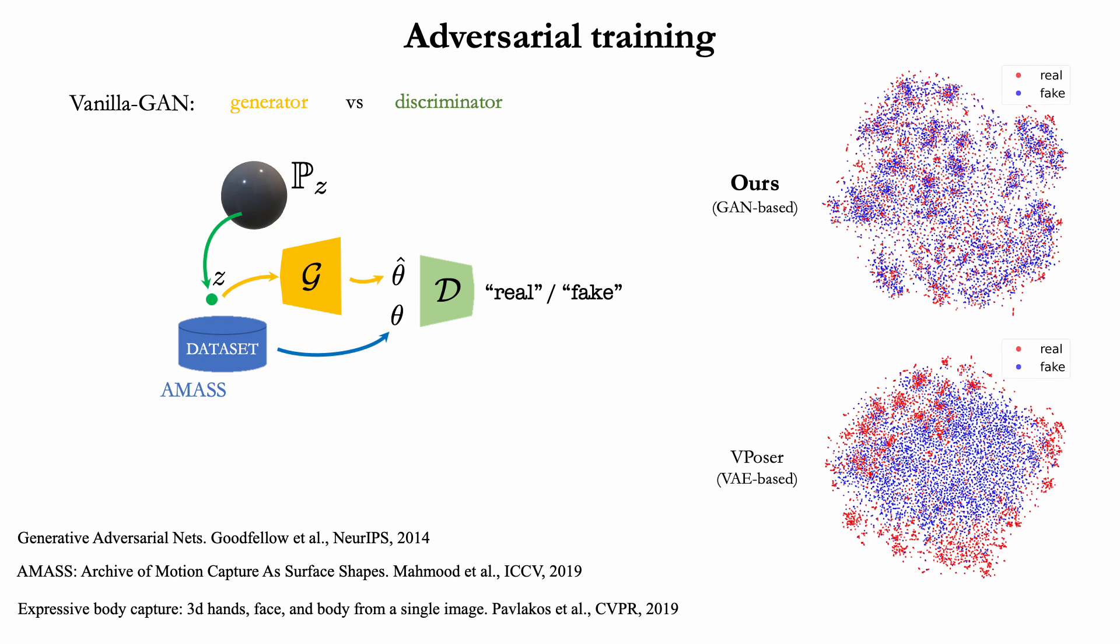Once the training is complete, the distribution of generated poses should cover the distribution of realistic ones, which we illustrate using t-SNE in the upper right figure. In contrast, if we use the state-of-the-art V-poser that is based on a variational autoencoder, the coverage is not as good as shown in the bottom right figure.